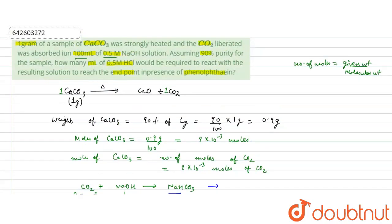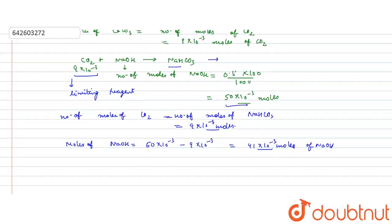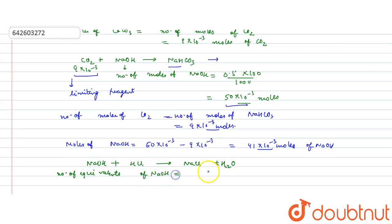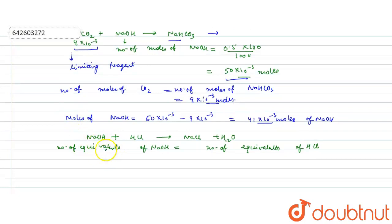To neutralize the remaining NaOH and reach the endpoint in the presence of phenolphthalein, HCl is required. The reaction is: NaOH + HCl → NaCl + H₂O. The number of equivalents of NaOH equals the number of equivalents of HCl.